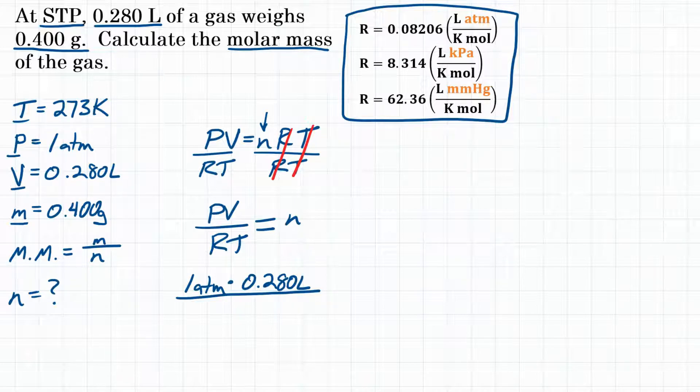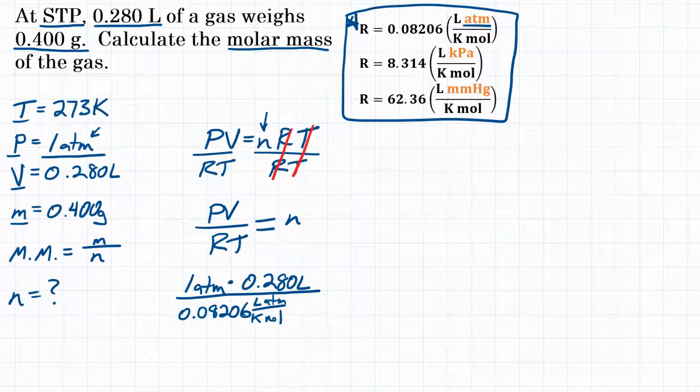Since we're at STP, we are at 1 atmosphere. So the unit of atmospheres is the one we're going to match up with. We are going to use this R value here because the units are liter atmospheres per Kelvin mole. So we will put 0.08206 with units of liter atmospheres per Kelvin mole.